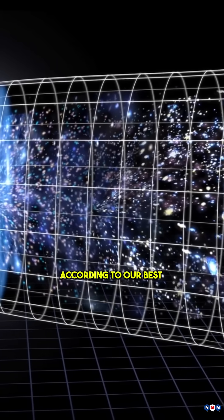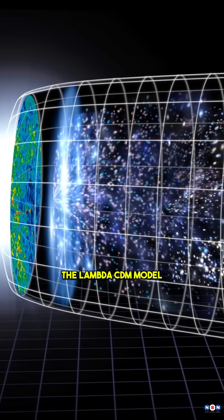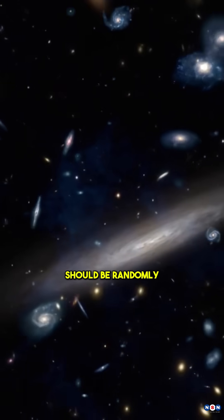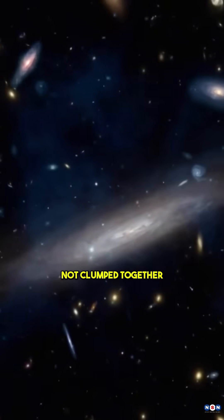That's not normal. According to our best model of the universe, the Lambda CDM model, these satellites should be randomly scattered around Andromeda, not clumped together.